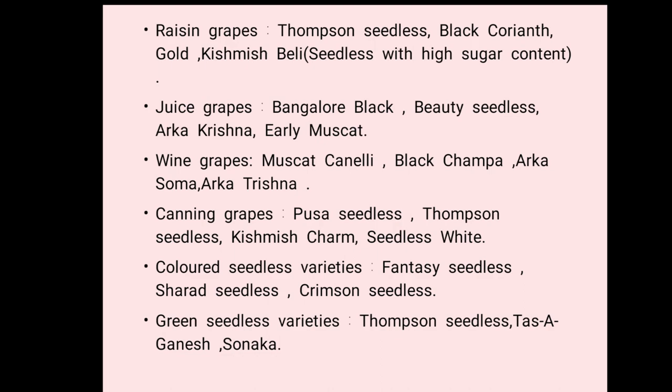Raisin grape varieties include Thompson Seedless, Black Corinth, Gold Kishmish, and Bailey — seedless varieties with high sugar content. Juice grape varieties include Bangalore Black, Beauty Seedless, Arka Krishna, and Early Muscat. Wine grape varieties include Muscat Canelli, Black Champa, Arka Soma, and Arka Trishna. Canning grape varieties include Pusa Seedless and Thompson Seedless. Colored seedless varieties are Phanfasy Seedless, Sharad Seedless, and Crimson Seedless. Green seedless varieties include Thompson Seedless, Tas-A-Ganesh, and Sonaka.